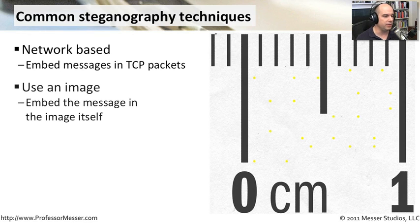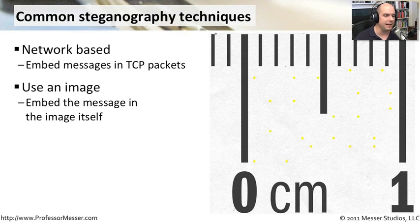It would be very difficult to see any of that data hidden inside the packet unless you knew exactly what to look for. Another way to do this — and we're going to try this ourselves — is to use an image. We've already seen how we can take a picture and embed our own messages, images, and documents inside of those pictures. It's a very unique way to hide information right in plain sight.